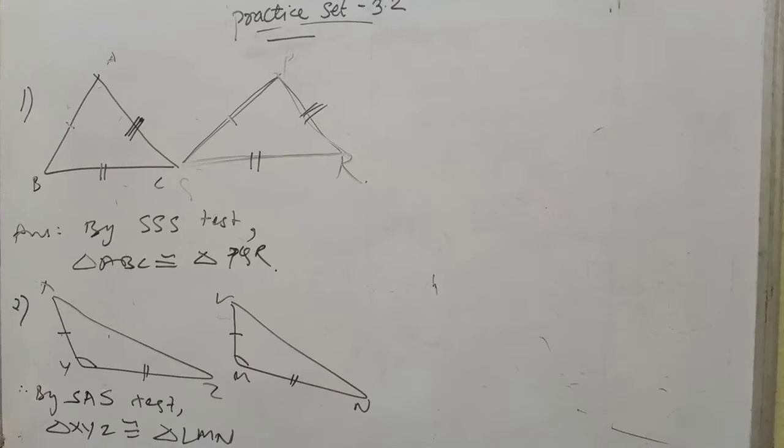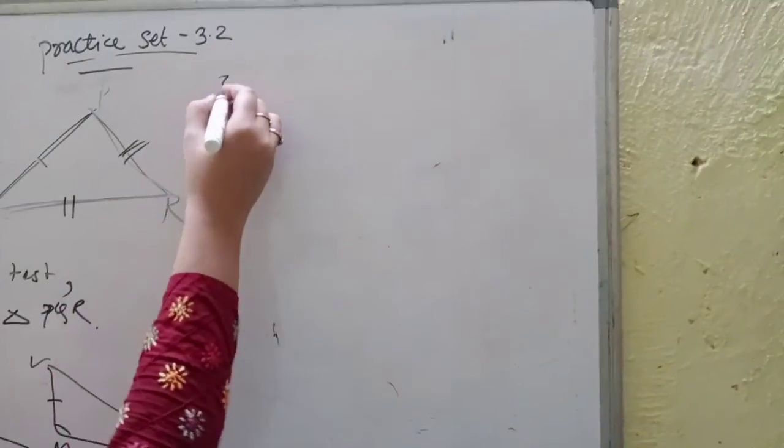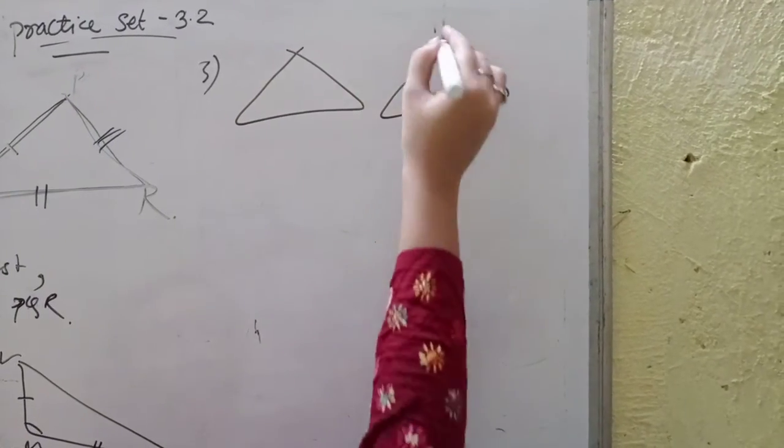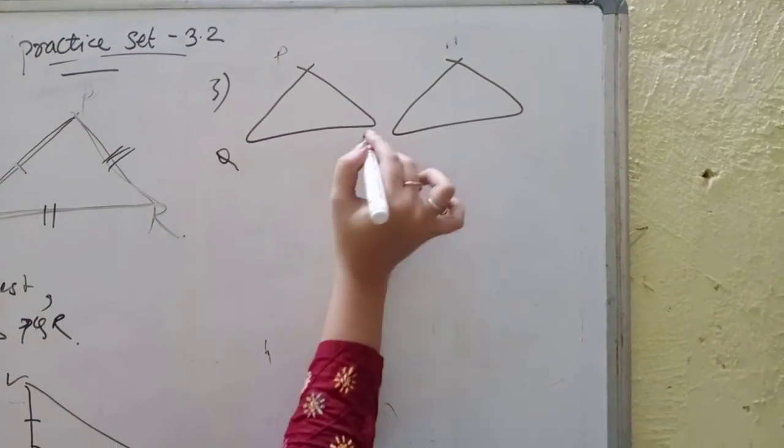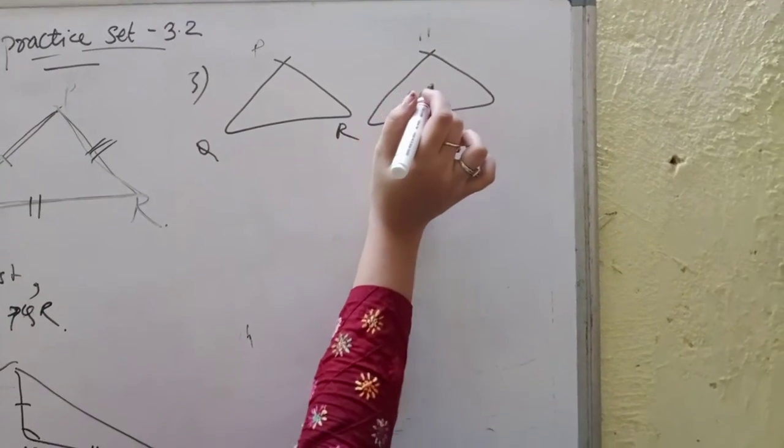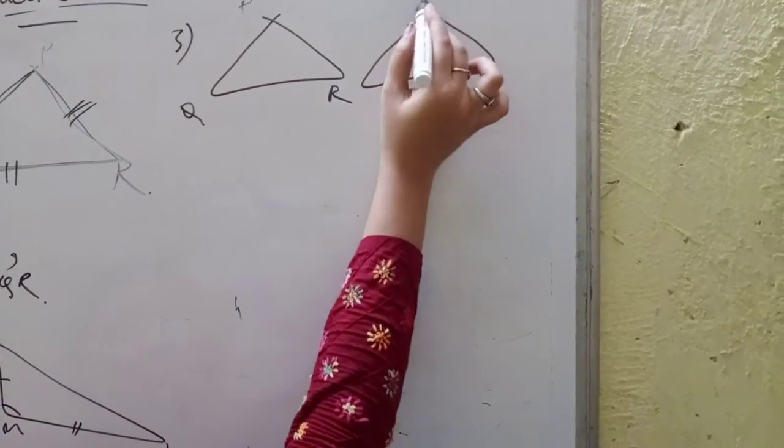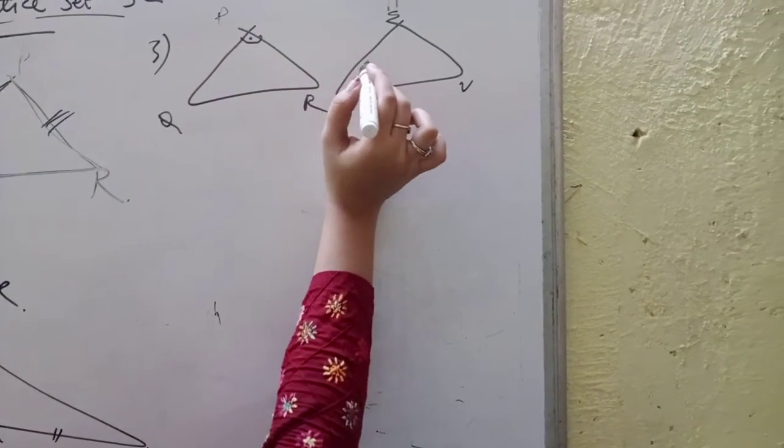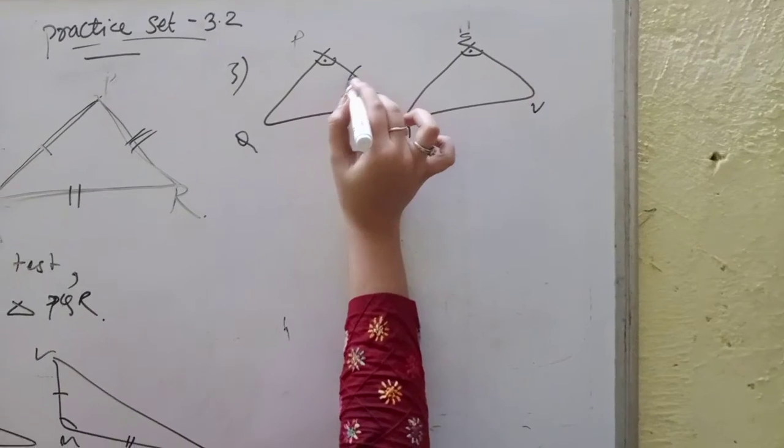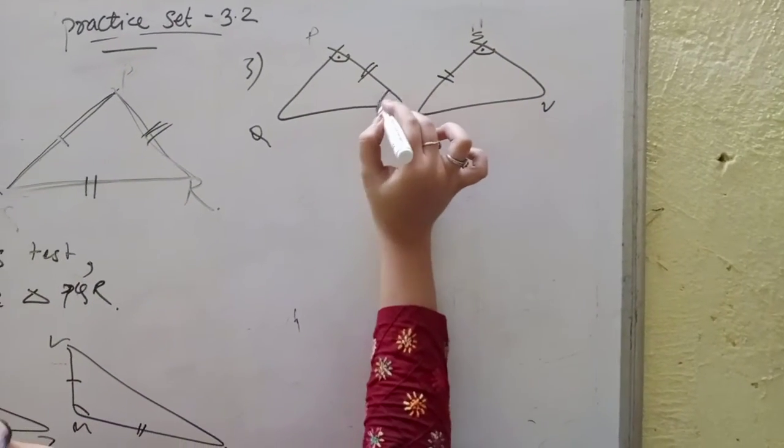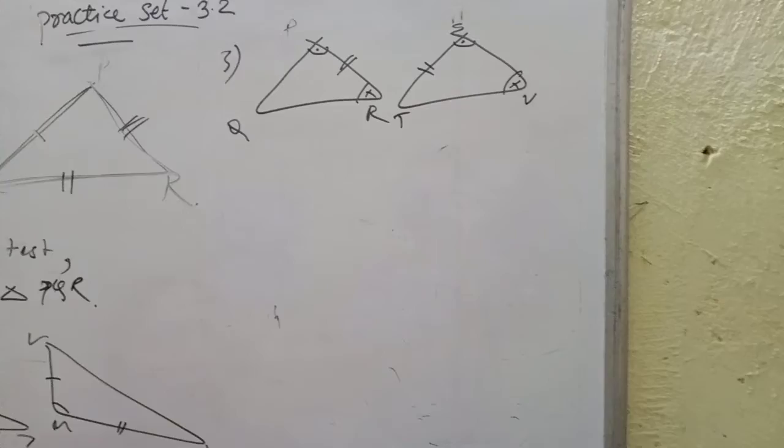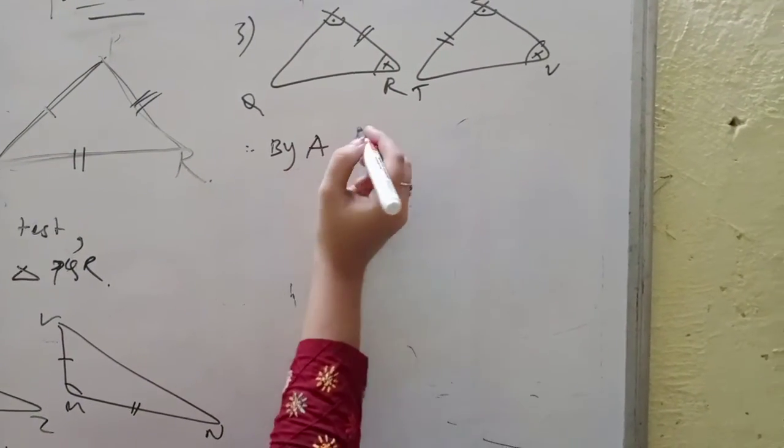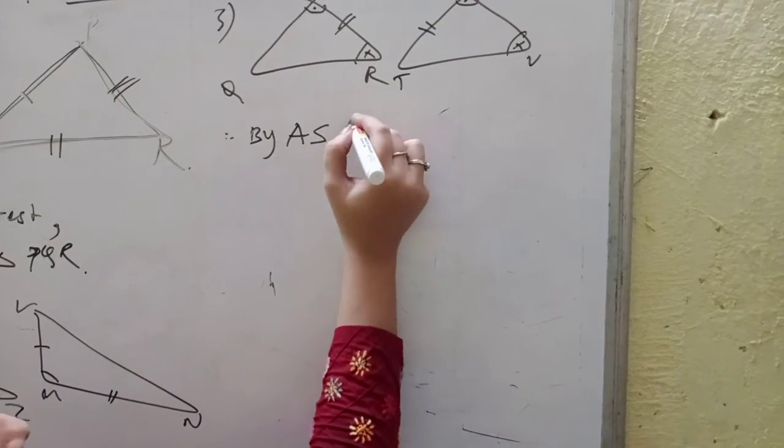Third one. In third one, two triangles are given: PQR and SDD. This is similar to this one, this is similar to this, and this is similar to this one. So first, we see angle same, then side same, then again angle same.